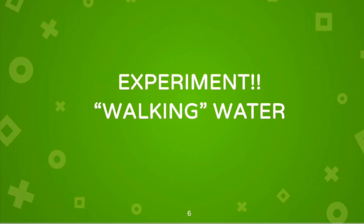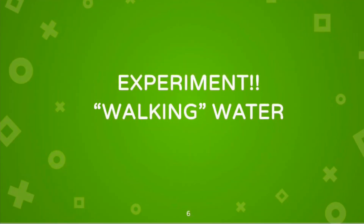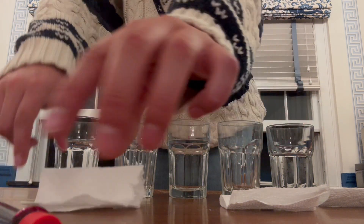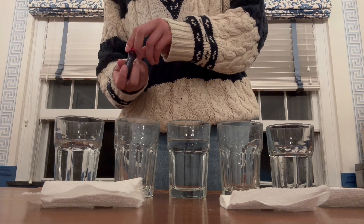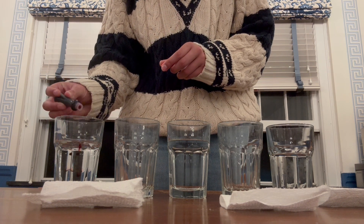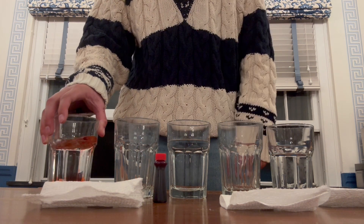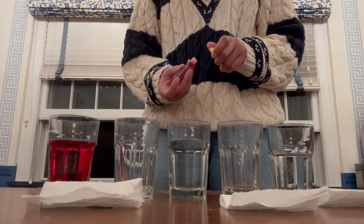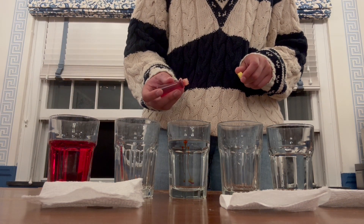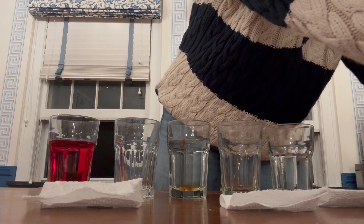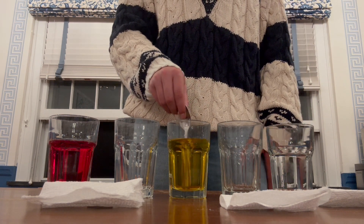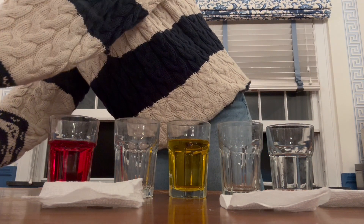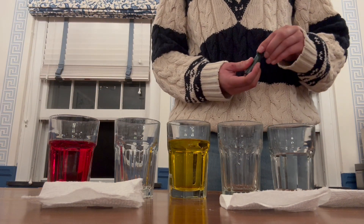Finally, we're getting into an experiment called walking water. As you can see, I have five cups — three of them are filled with water and two of them are empty. What I'm going to do is add some food coloring to the three cups that have water. I chose red, yellow, and blue because that will make a really pretty color in the end. I'm just adding the food coloring and stirring it up as you can see in these videos.